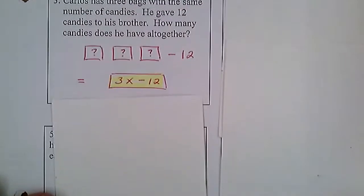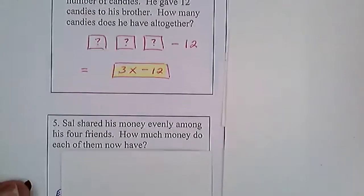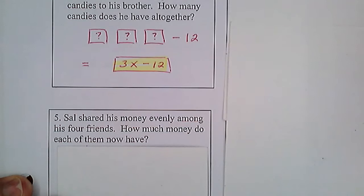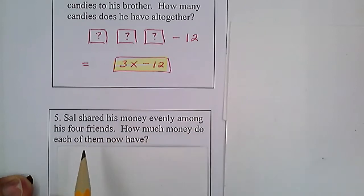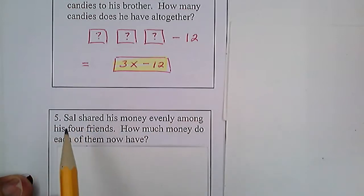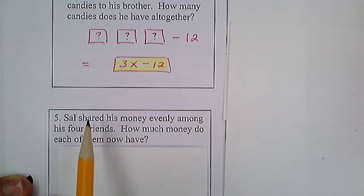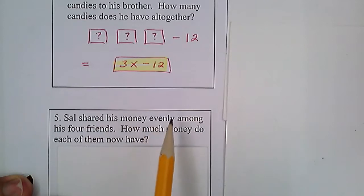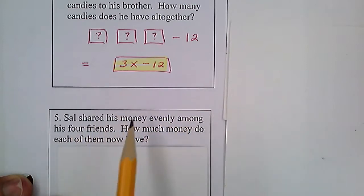You're going to have to do number four on your own. Let's look at number five. Sal shared his money evenly among his four friends. How much money does each of them now have? Do we know how much money Sal started with? We don't — it doesn't tell us. Maybe he had $100, maybe only $4. If he's sharing or splitting it evenly among his four friends, is that adding, subtracting, multiplying, or dividing? He's going to divide it up.